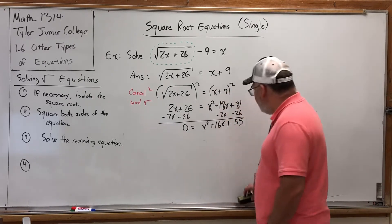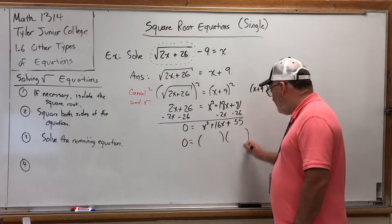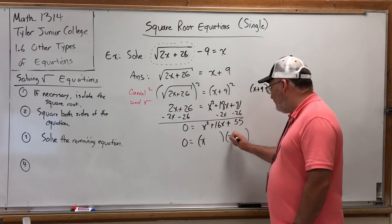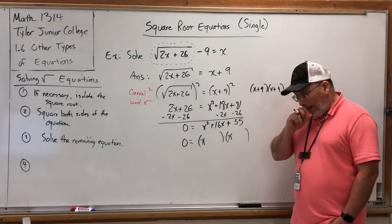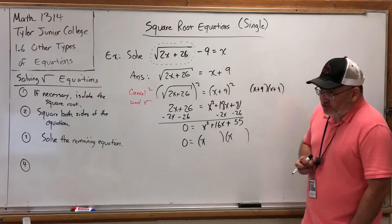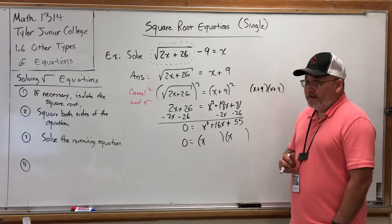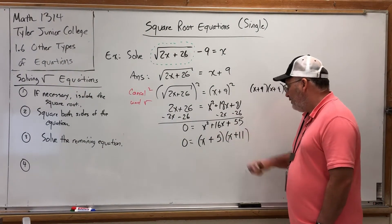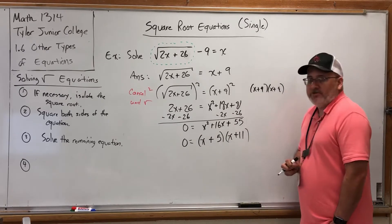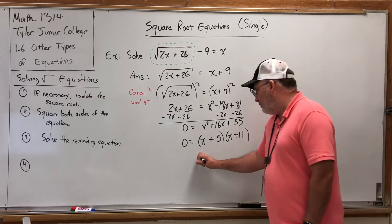Feel free to use the quadratic formula, but I'm pretty sure this guy factors. Because the question you would ask yourself is, what numbers multiply to give 55 and add to give 16? Well, I only know two pairs of numbers that multiply to give 55. 1 times 55, and 5 times 11. 5 and 11 also have a sum of 16. So this will factor in x plus 5 and x plus 11. And now we can set each factor equal to 0.